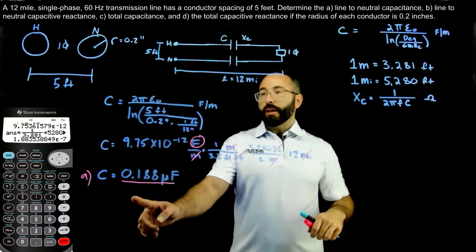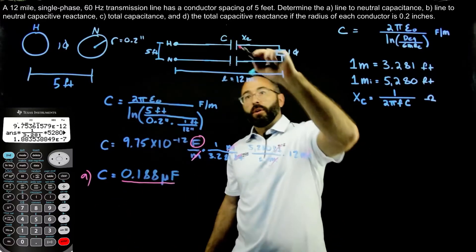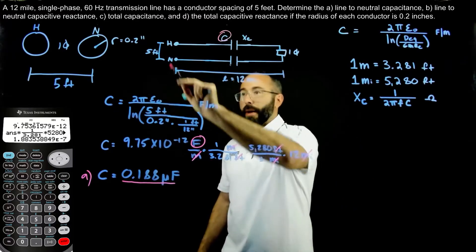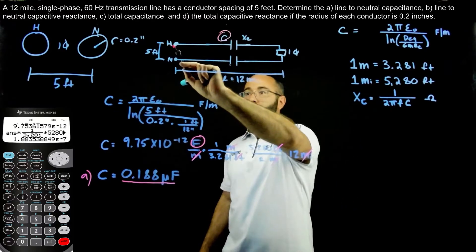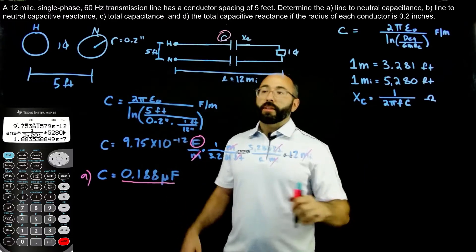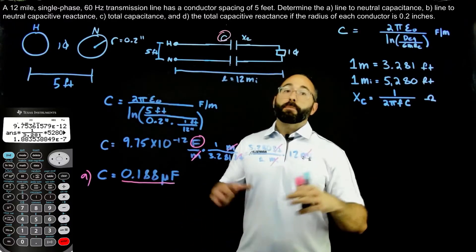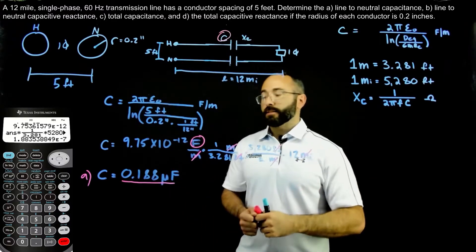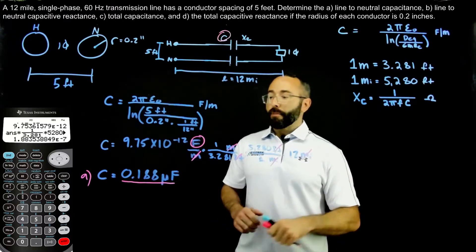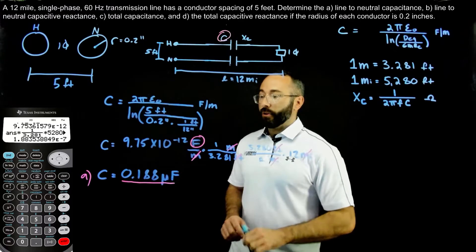So what did we just calculate? We calculated the capacitance of just the hot conductor, which equals the capacitance of just the neutral conductor. This is the per-phase capacitance, the line-to-neutral capacitance, the average capacitance, the one-way capacitance — all different vocabulary words for the same value.